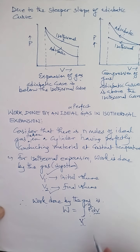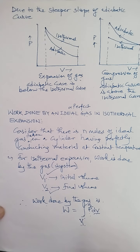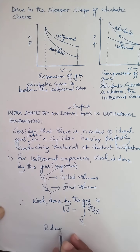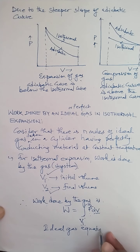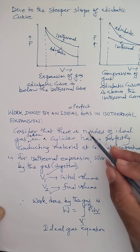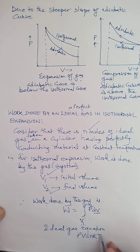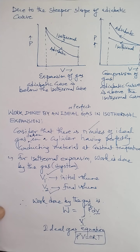To calculate the work done, isothermal expansion follows Boyle's law. The relation between pressure, volume, and temperature is given by the ideal gas equation. For n moles of gas, the ideal gas equation is PV = nRT, where P is pressure, V is volume, n is the number of moles, R is the molar gas constant, and T is the temperature.